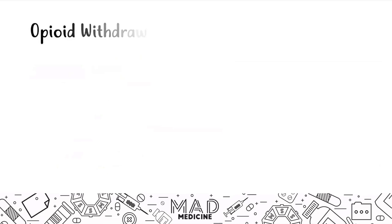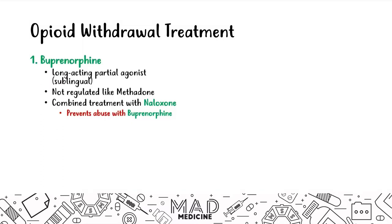For withdrawal treatment, the first drug is buprenorphine, a long-acting partial agonist — different from naloxone, which is a short-acting antagonist. Buprenorphine is not as regulated as methadone, but it is usually combined with naloxone to prevent buprenorphine abuse, since naloxone as a short-acting antagonist will block any agonist effects if the combination is misused.